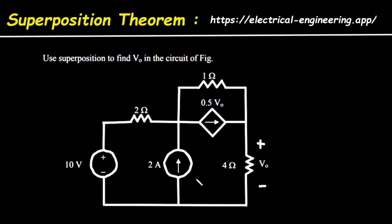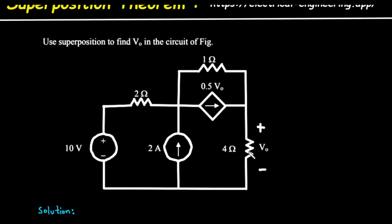Understanding the circuit and the method. First, let's look at the circuit. We have a 10-volt independent voltage source, a 2-amp independent current source, three resistors with values of 2 ohms, 1 ohm, and 4 ohms, and a dependent current source with a value of 0.5 times V0. The voltage we want to find, V0, is the voltage across the 4-ohm resistor. The superposition theorem states that the total response in a linear circuit with multiple independent sources is the sum of the responses caused by each independent source acting alone.